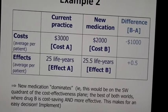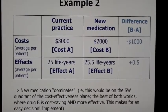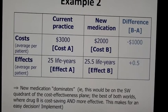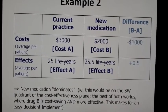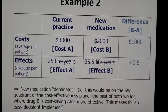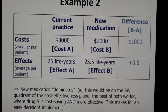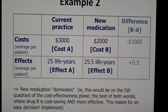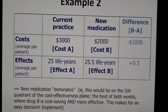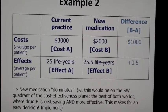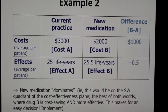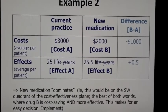Here's another example. The new medication is more effective and less costly — drug B is more effective and less costly. So we're in the southeast quadrant, which makes the decision very easy. We should take that up into practice; it's a very good deal compared with the standard of care, drug A.